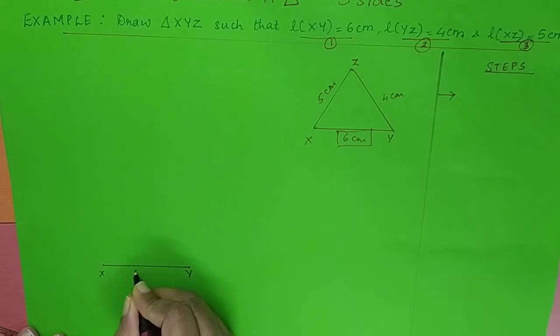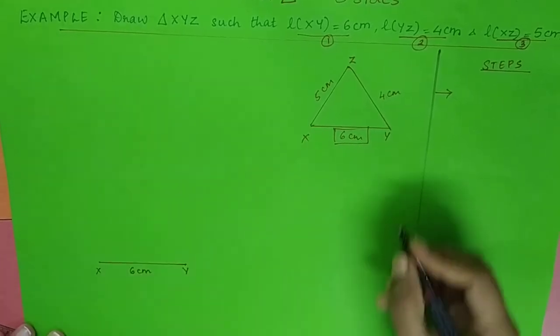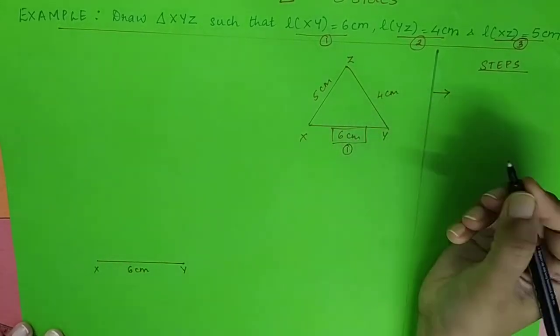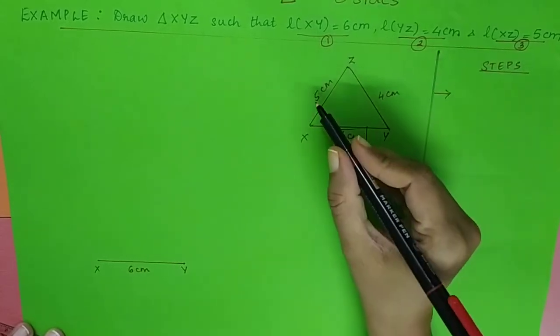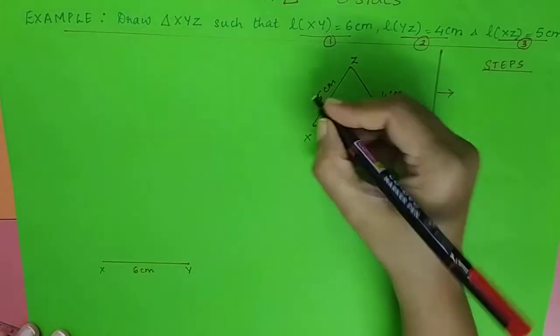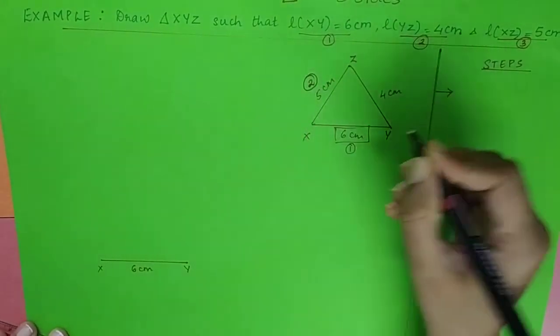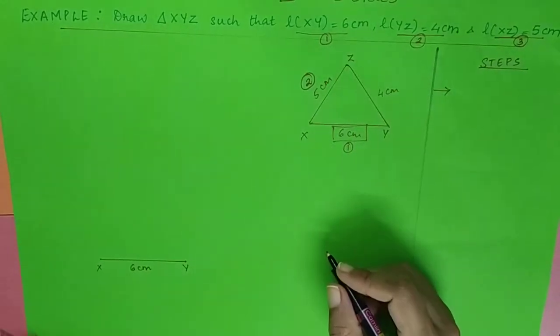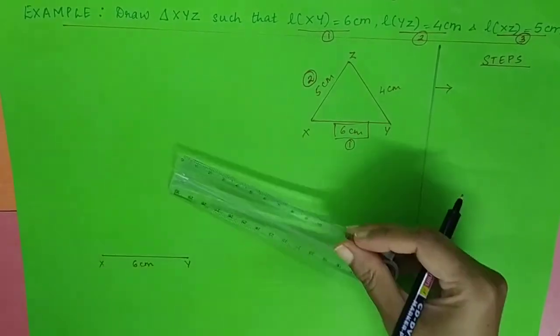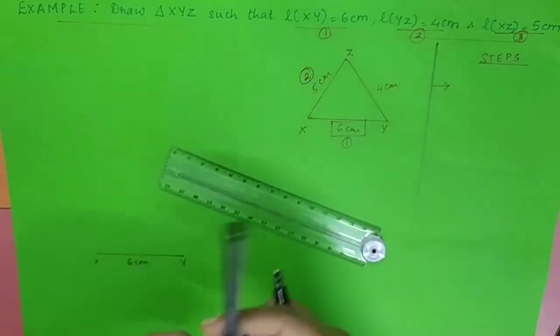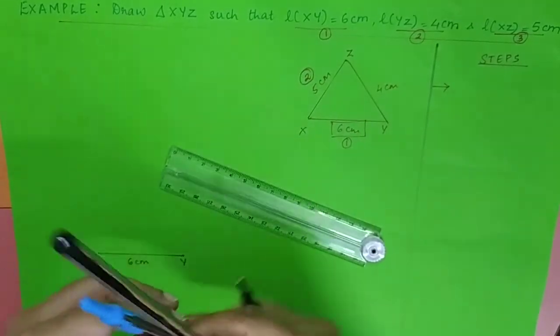Now my first step to draw the base is done. Now I draw any of the other two sides - I'm drawing the second side, that is XZ. Now I'm not going to use my scale to draw the second side, but I'm going to use the geometrical instrument, that's the compass.